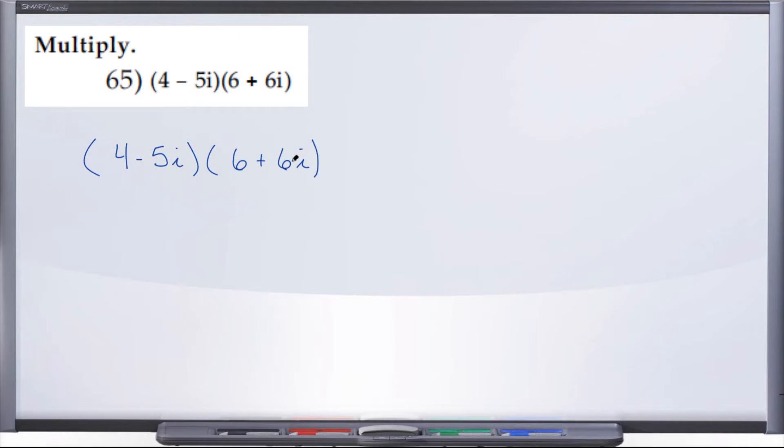Well, I don't want you to let these i's scare you. What would you do if these were x's? If this was 4 minus 5x times 6 plus 6x? You'd probably tell me to FOIL, right? Well, let's do that here. Let's go ahead and FOIL.